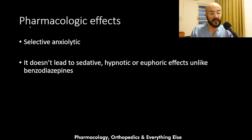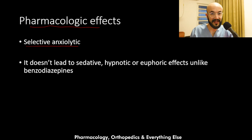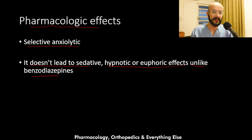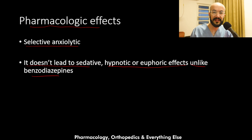Regarding pharmacologic effects, buspirone has selective anxiolytic effects — it works only to relieve anxiety by activating serotonin receptors. It does not lead to sedative, hypnotic, or euphoric effects, unlike the benzodiazepines. This is because benzodiazepines work on GABA and thereby produce hypnotic, sedative, and euphoric effects, while buspirone works on serotonin, giving it anxiolytic effects only.